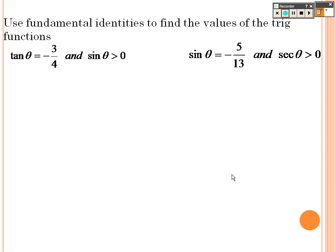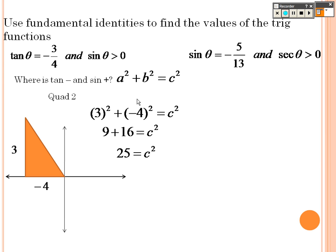So for this problem right here, use the fundamental identities. Where is tangent negative and sine positive? The only other place that sine's positive is in the first quadrant and the second quadrant. So that means this has to be in quadrant 2, because in quadrant 1, everything is positive. So when we go to draw our picture here, I know that tangent is opposite, which is 3, over adjacent, which is negative 4. So I need to find out what that is by doing the Pythagorean theorem. So that's 3 squared plus negative 4 squared, so it's 9 plus 16, so it's 25, so I get 5.